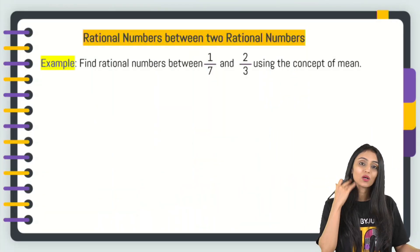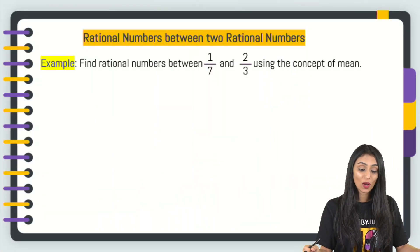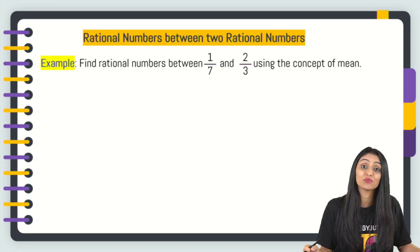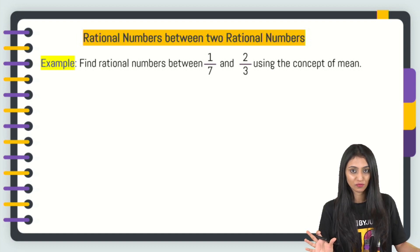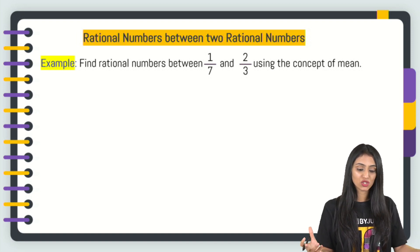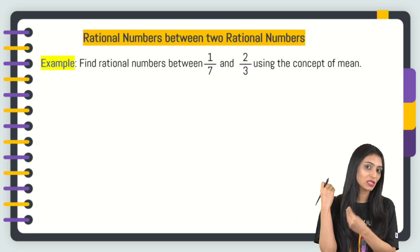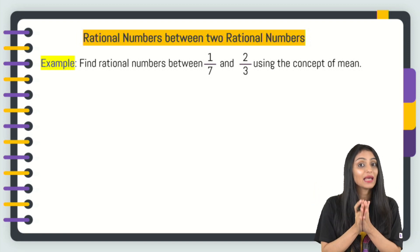Now, let's use a question here. Find rational numbers between 1 by 7 and 2 by 3 using the concept of mean. As we all know what mean is, that's the average of the numbers. How do we find the average? You add the numbers. Let's suppose I'm giving these two numbers. I'll add them up and I'll divide by 2. That's how we find the average.